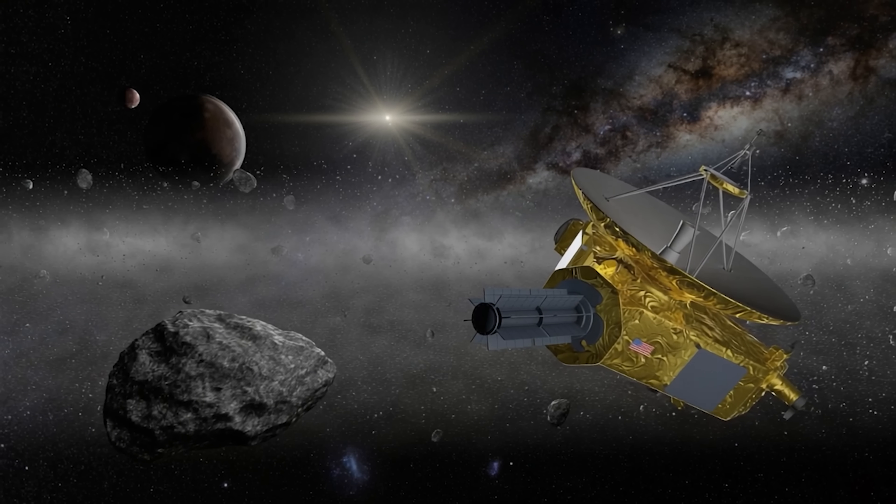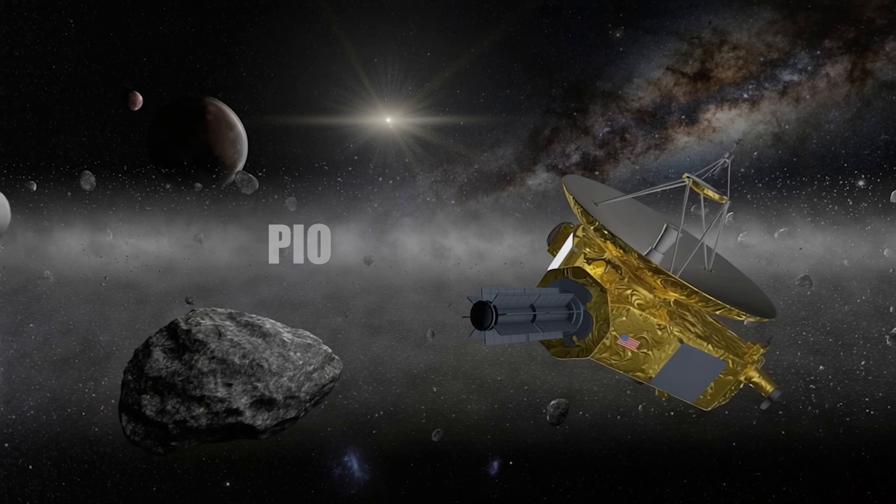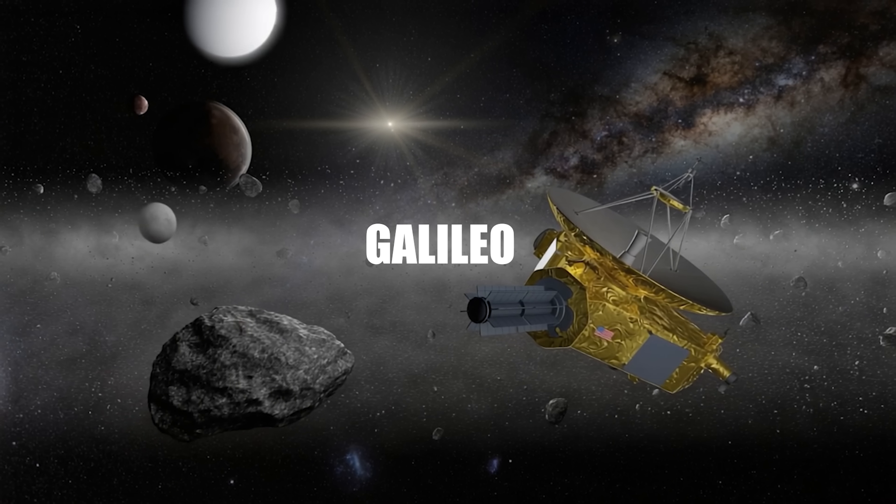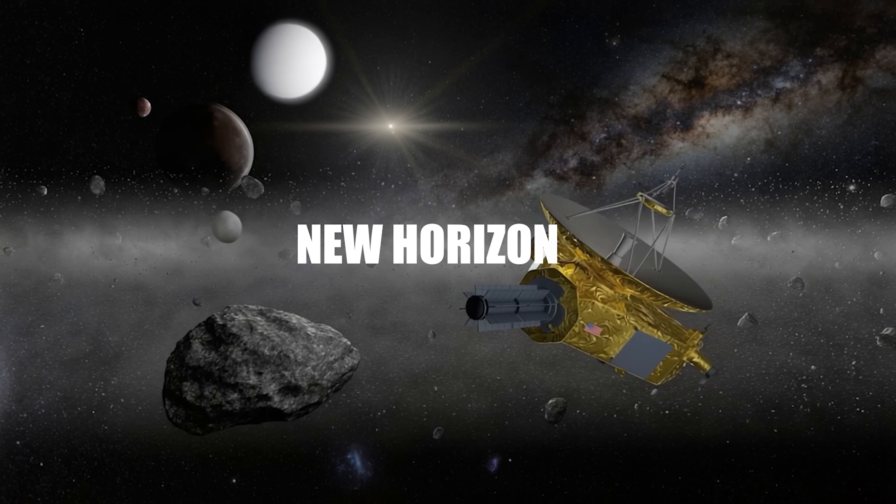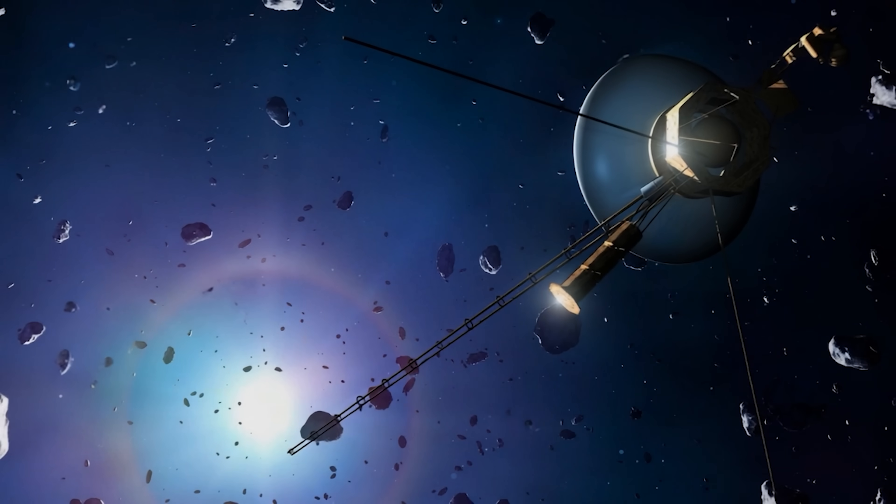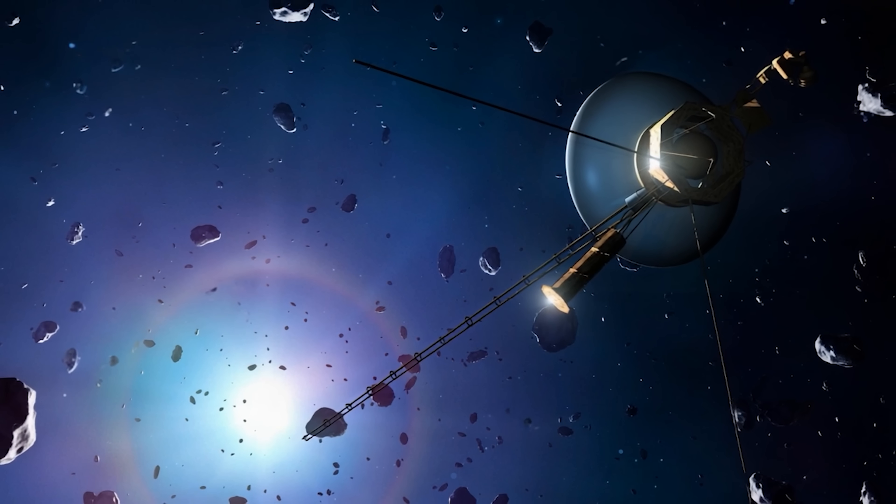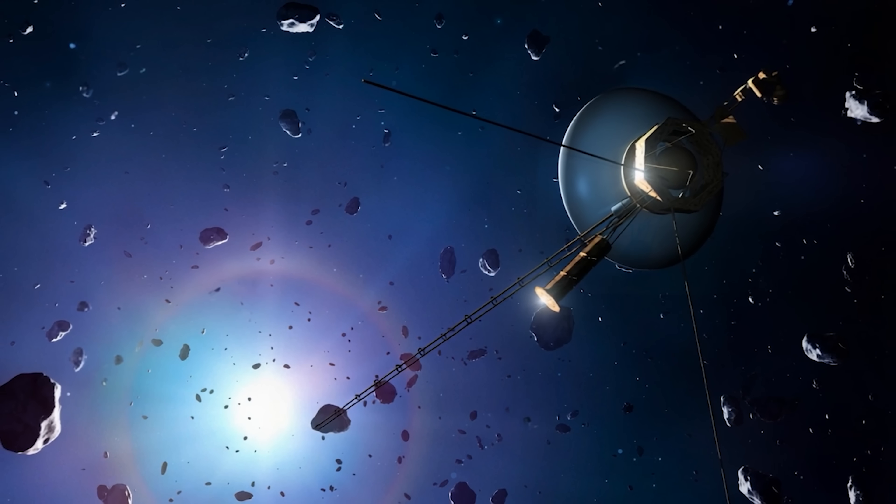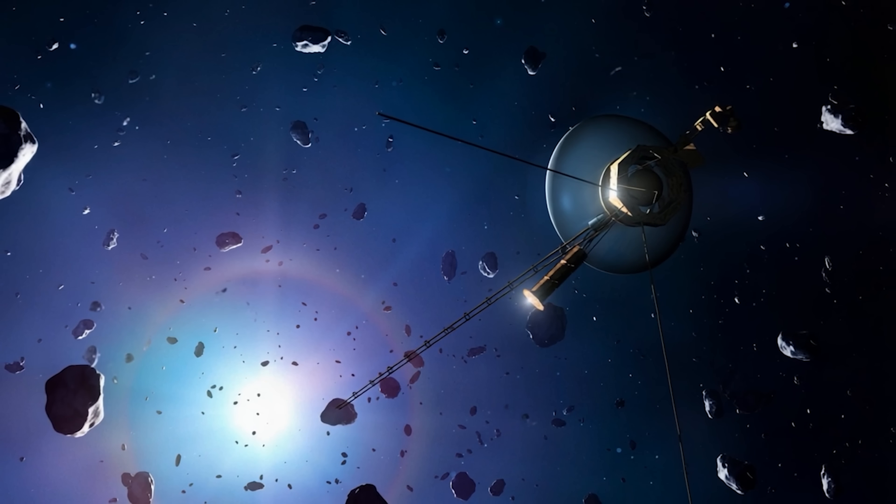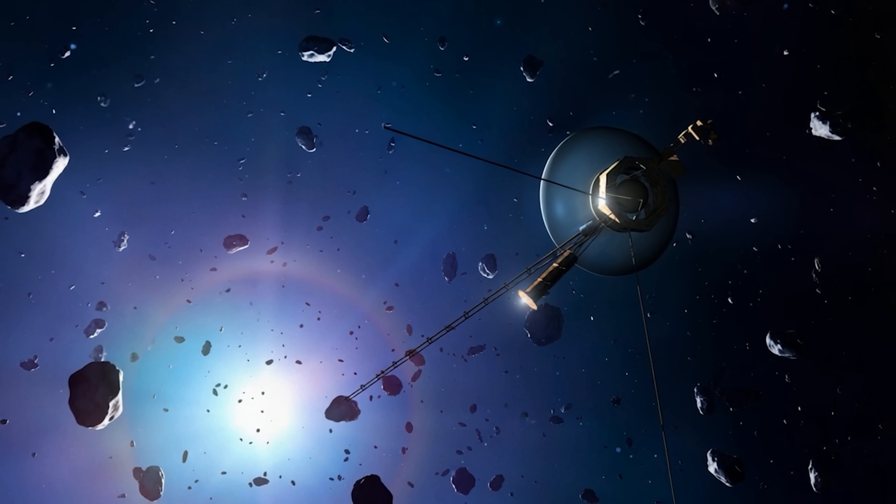The space probes that have crossed the asteroid belt, Pioneer 10 and 11, Voyager 1 and 2, Galileo, Cassini, New Horizons, and many others, have never had traffic problems. They didn't have to make evasive maneuvers, didn't turn on defense systems, didn't dodge rocks by a whisker. They crossed the region without even realizing they were in the fearsome asteroid belt.